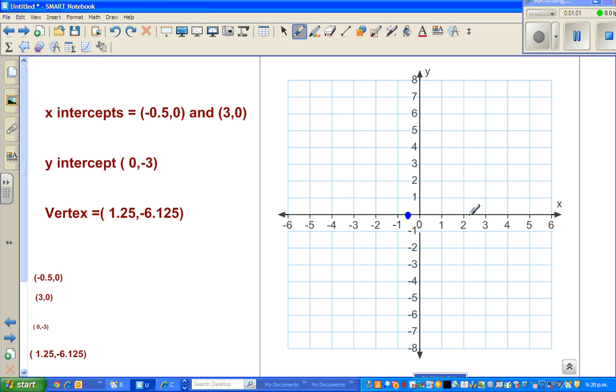3, 0. This is 1, 2, 3, and this is 3, 0. Your y-intercept is 0, negative 3. So 0, negative 3 is the y-intercept.